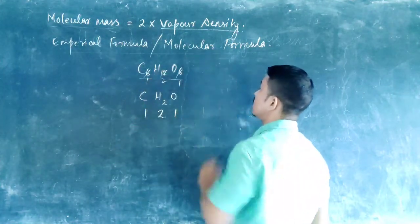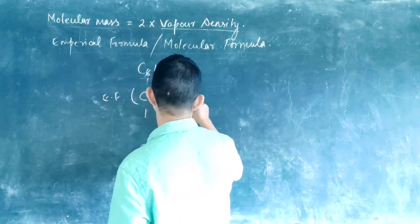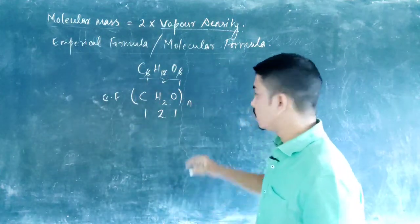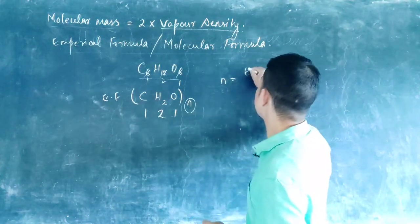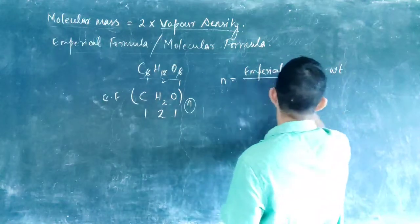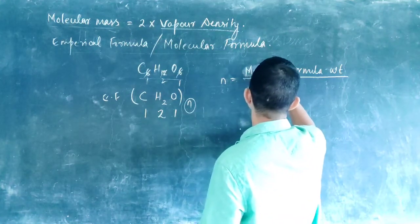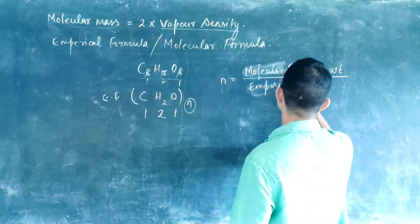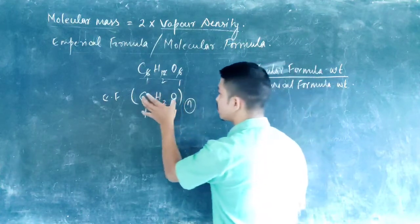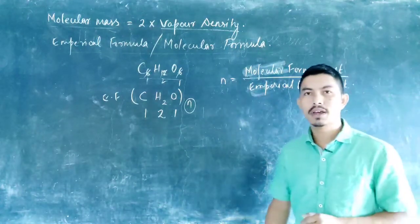The empirical formula of glucose is CH2O. If we multiply the empirical formula with a certain whole number n — here it is 6 — we can easily convert the empirical formula to the molecular formula. To find n, it is simply: N equals molecular formula weight divided by empirical formula weight. In this way you can find the whole number with which the empirical formula can be multiplied to change into the molecular formula.